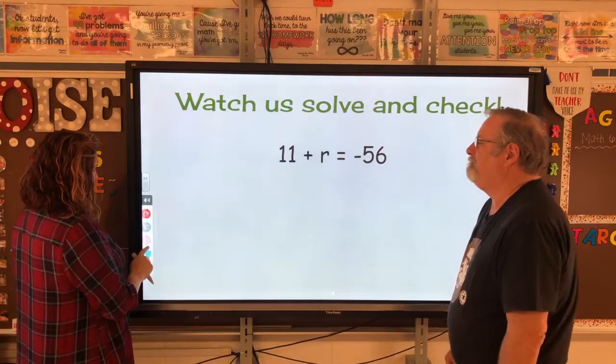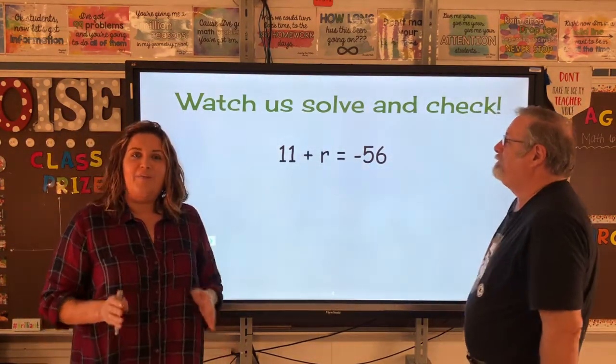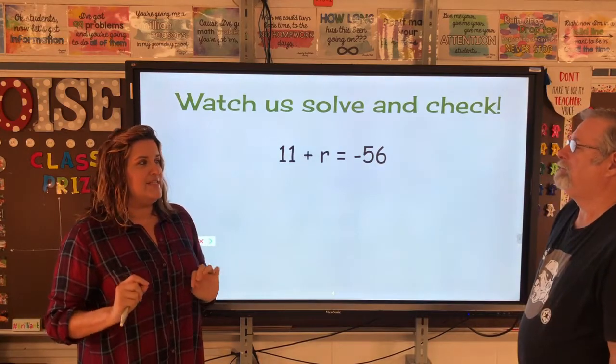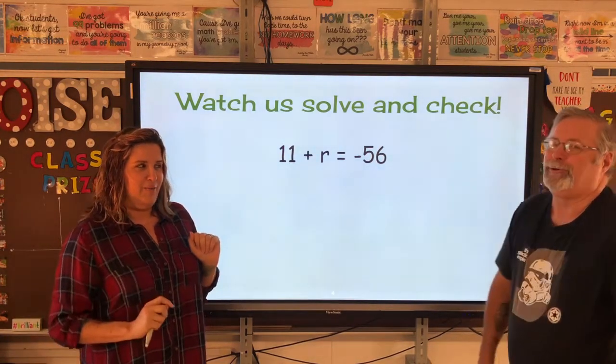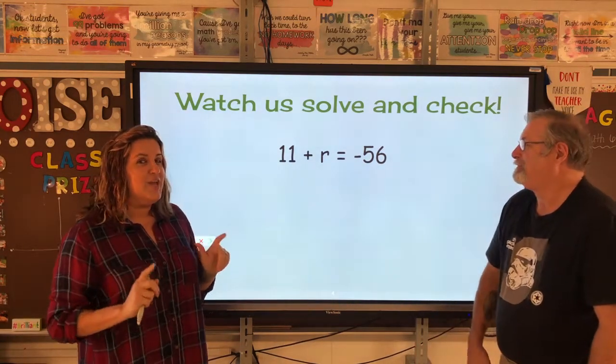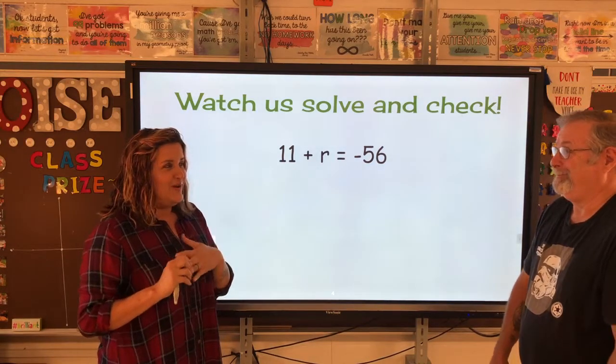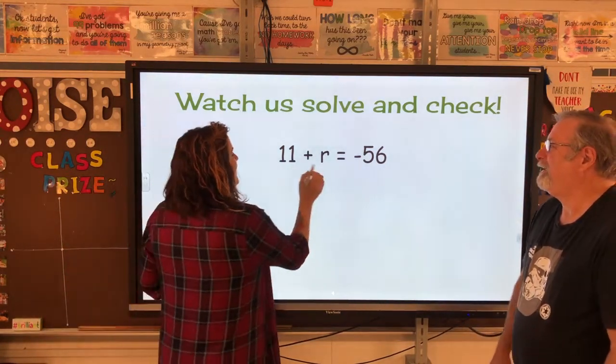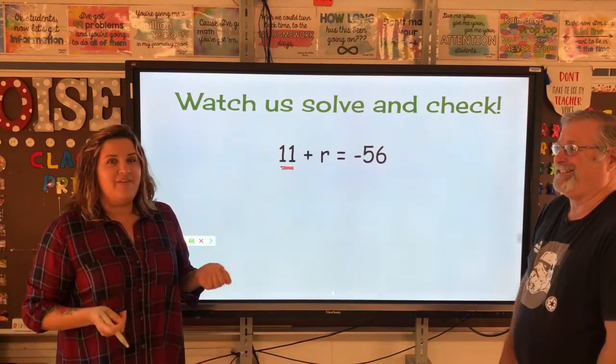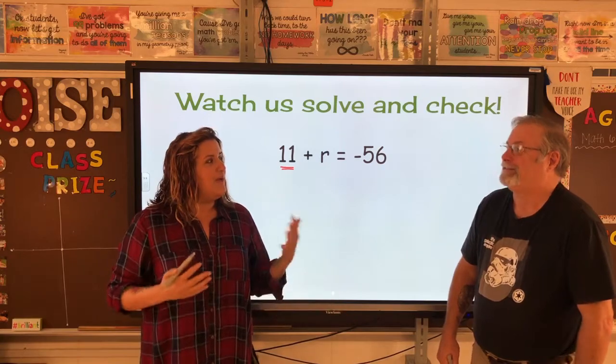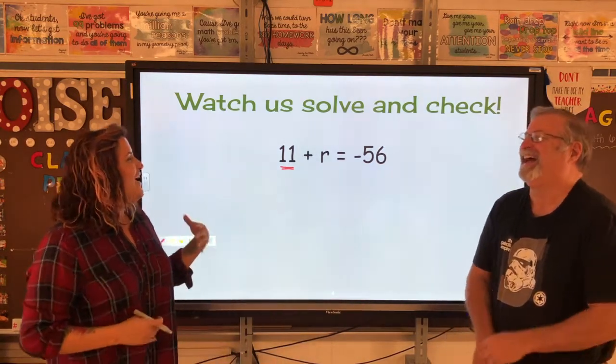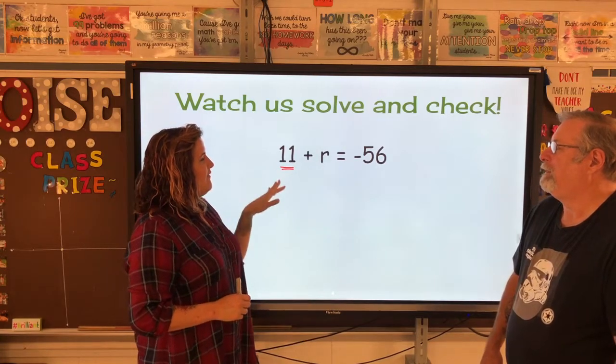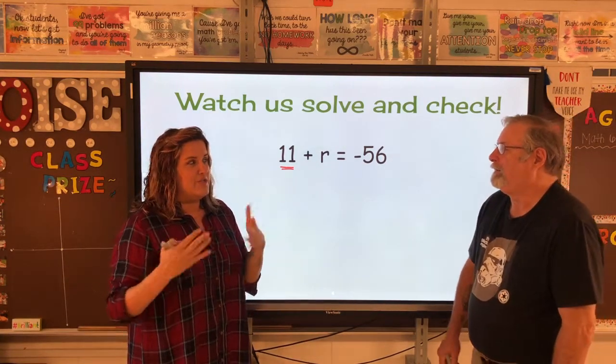So we'll show you what that means when we look at our equation. I know it's an equation because it has an equal sign. I have 11 plus R equals negative 56. My job is to isolate the variable. So the variable is like your boyfriend, your girlfriend, you're trying to have time with them. You have to get their friends away. So right now, the R is hanging out with 11 friends, and I need these 11 friends to go so I can have alone time with my significant R.